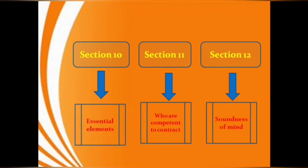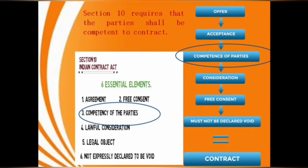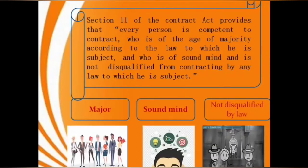Section 12 lays down a test of soundness of mind. A contract is basically an agreement that is enforceable by law. In order to be enforceable, the agreement must satisfy the requirements given under Section 10 of the Indian Contract Act 1872. According to Section 10, an agreement becomes a contract if it is entered between parties who are competent to contract. Section 11 defines the capacity of a person as dependent on three aspects: attaining the age of majority, being of sound mind, and not being disqualified from entering into a contract by any law that he is subject to.